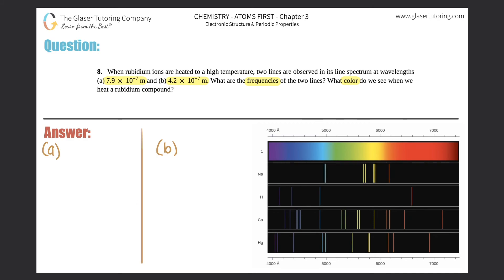For part a, they're telling us we have a wavelength of 7.9 × 10^-7 meters, and they're looking for the frequency. So what's the formula between wavelength and frequency? It's c = wavelength × frequency.